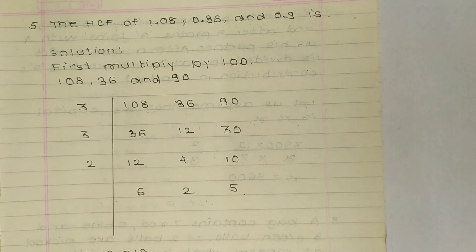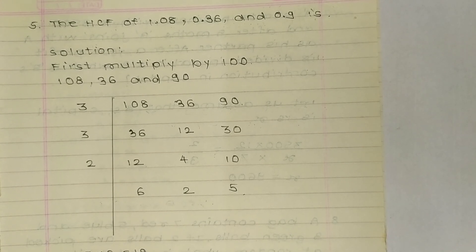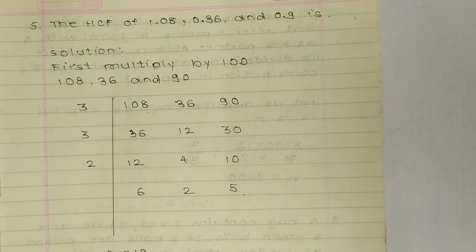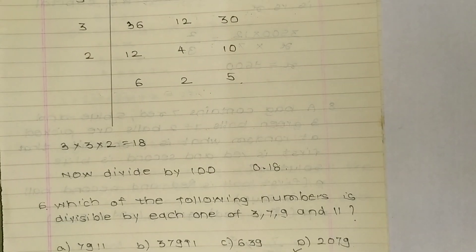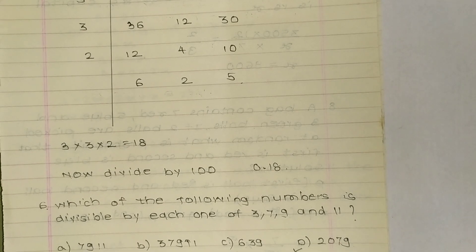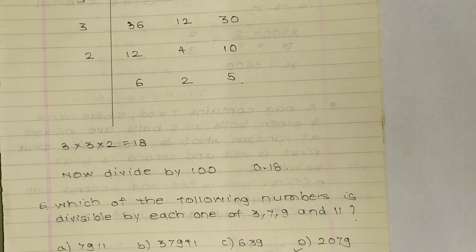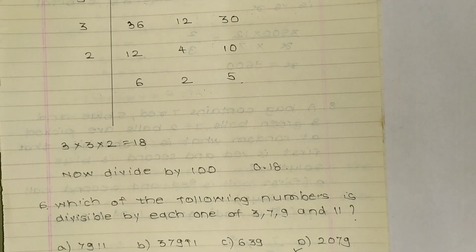So we are dividing them by 2, so here we got 6, 2, and 5. Now here we are multiplying the numbers on the left column, that is 3, 3, 2. So we got result 18. Now divide by 100, that is 0.18, because we first multiplied it by 100.